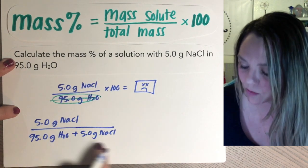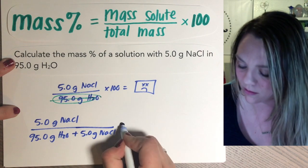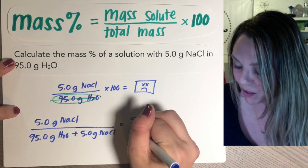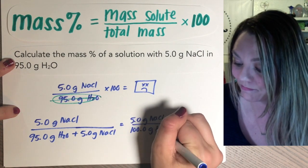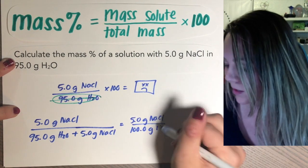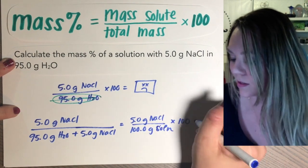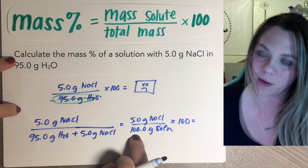This is what your total mass is, which is really just 5 grams divided by 100 grams. That's going to be 100 grams of solution, right? Times 100 because it's a percent. So 5 divided by 100 times 100.